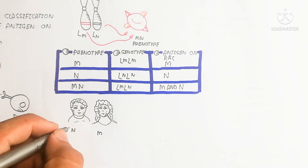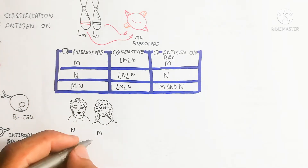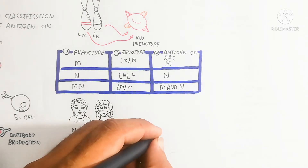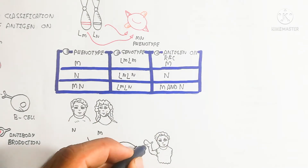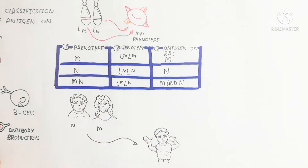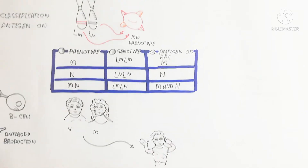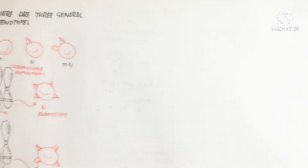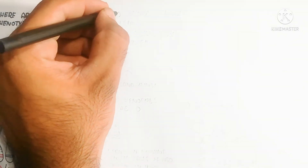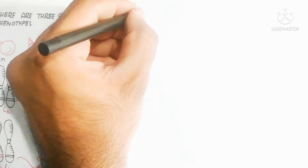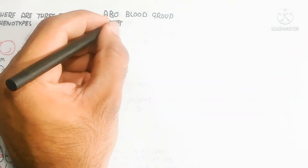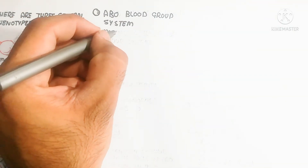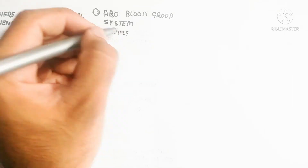Here is the MN inheritance chart. You can stop the video to watch this. For example, when the father contains an N gene and the mother contains an M antigen, the baby produces an MN type genotype.